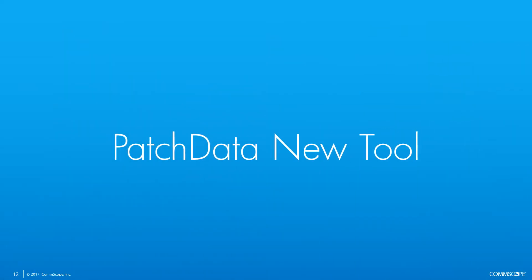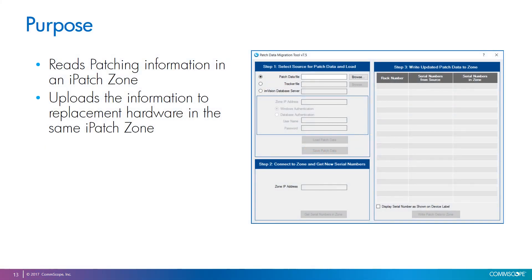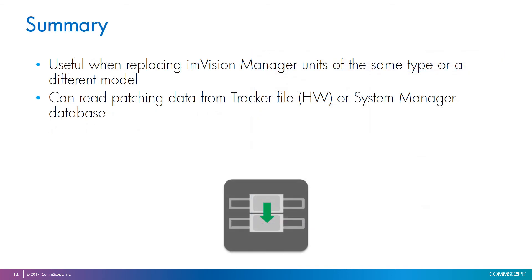Next, let's talk about the patch data tool. This is a standalone program that we have included in System Manager 7.5 installation package, and the purpose of this tool is to read patching information about a zone and be able to push this information into new replacement controller units installed in the zone. You can use this tool when you need to replace one or more units for any reason, or also if you decide to upgrade your Envision managers to the new models.